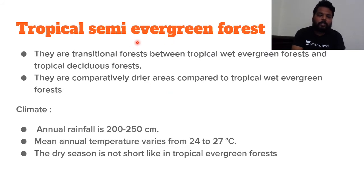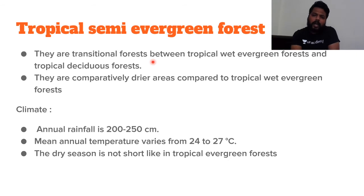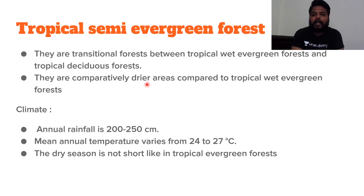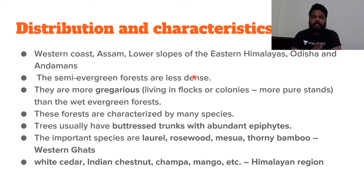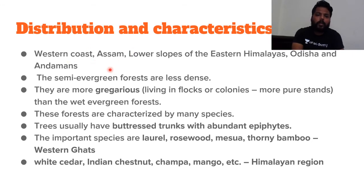The next type is tropical semi-evergreen forestry — transitional forests between tropical wet evergreen and tropical deciduous. They are comparatively drier areas with rainfall of 200 to 250 cm, and mean annual temperature around 24 to 27°C. The dry season is not as short as in tropical wet evergreen — there is a distinct dry season. Distribution: adjacent to regions where tropical wet evergreen is found — on the western coast of India surrounding the monsoon entry point, and in the Purvanchal ranges around Assam.